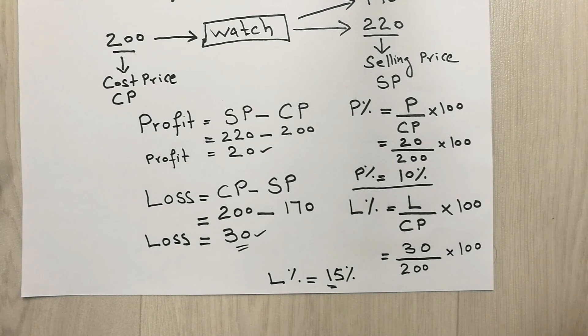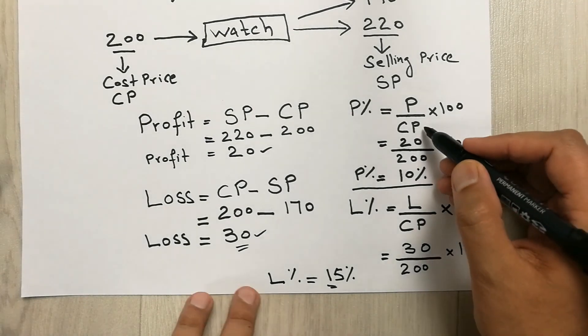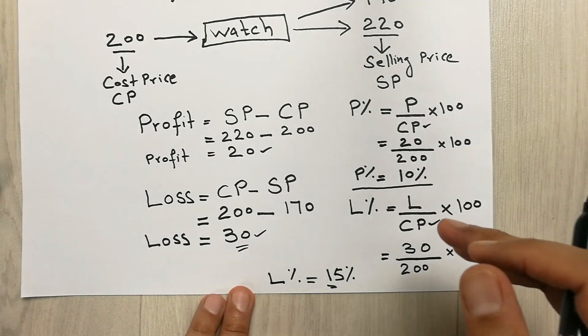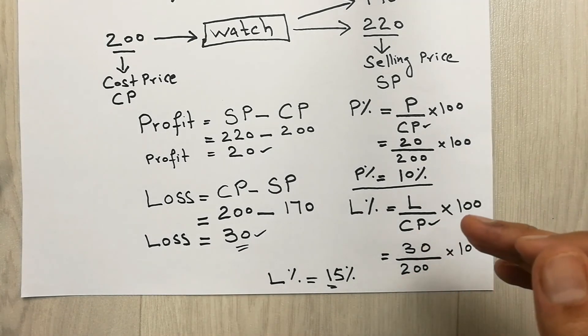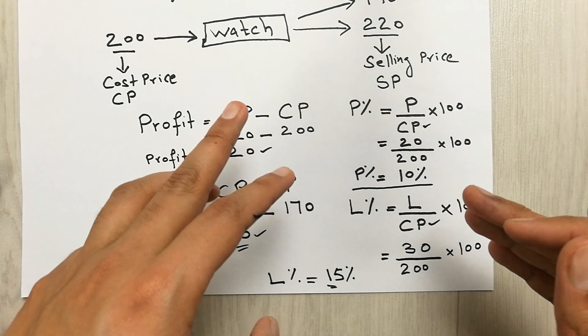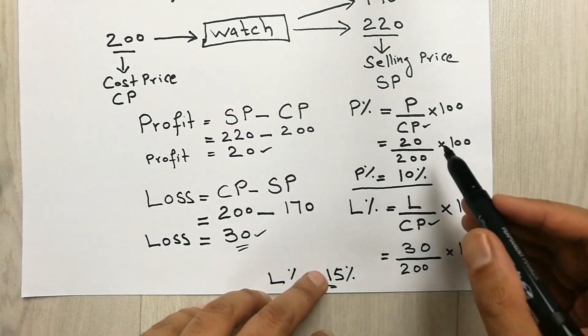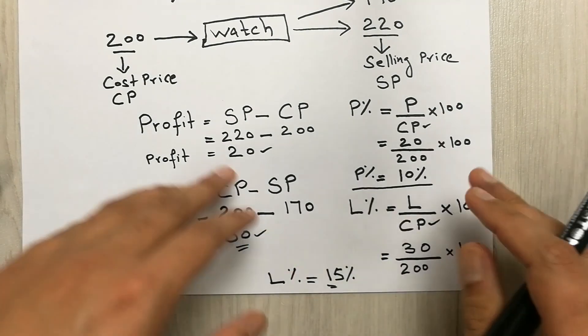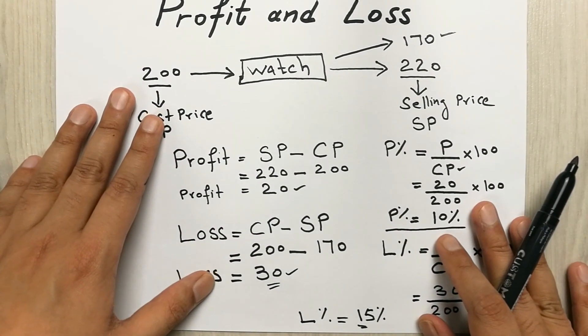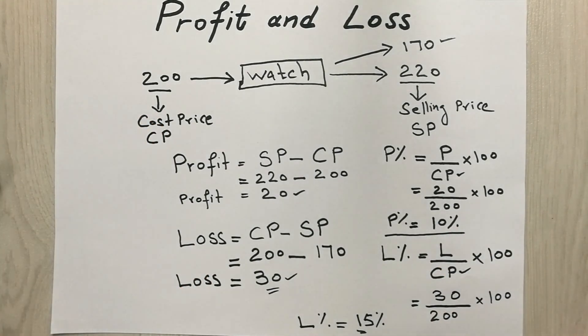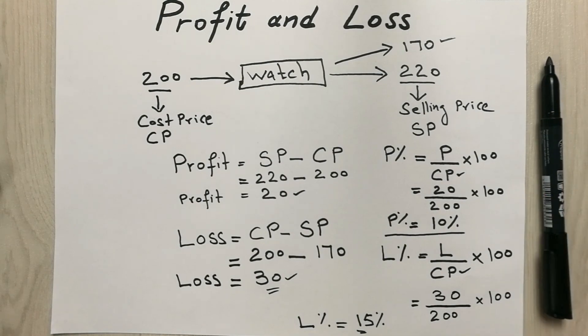So guys, you have a question in your mind, why we put cost price here and here at both places? So cost price is always constant because this is the amount we pay to get the item. We get the watch, so this is the amount we pay to the shopkeeper. So we will always have cost price in denominator. So this is for today's video. I hope you like the video. I hope you enjoy the video. Please do subscribe to my channel. Thank you very much.